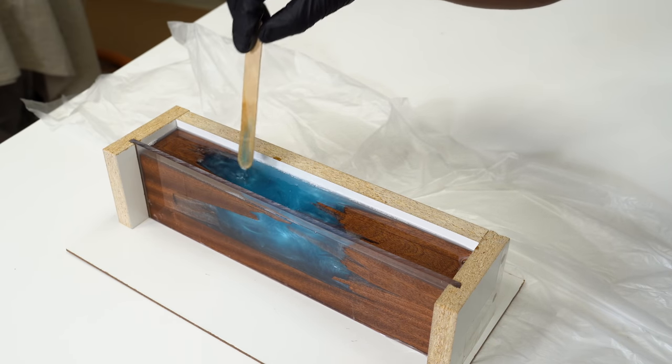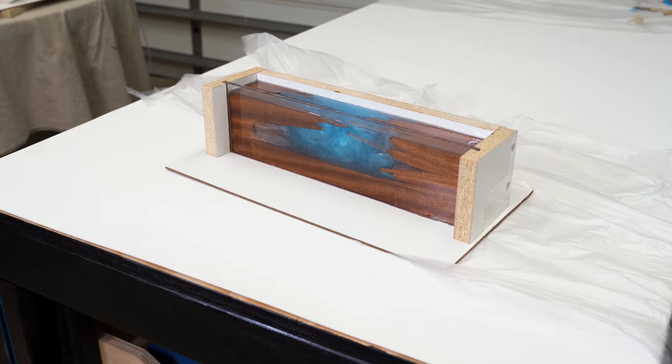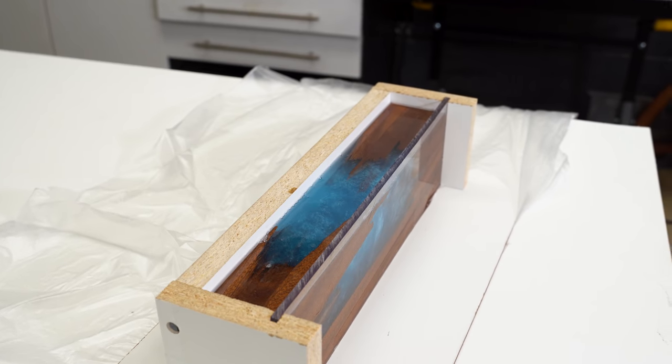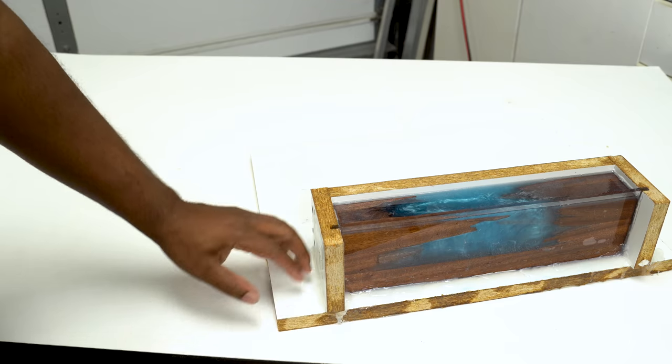Up until this point, everything was going great. When I got ready to move this out the way, I must have flexed this and it sprung a leak. Much of this could have been avoided had I used silicone inside the corners of the mold.